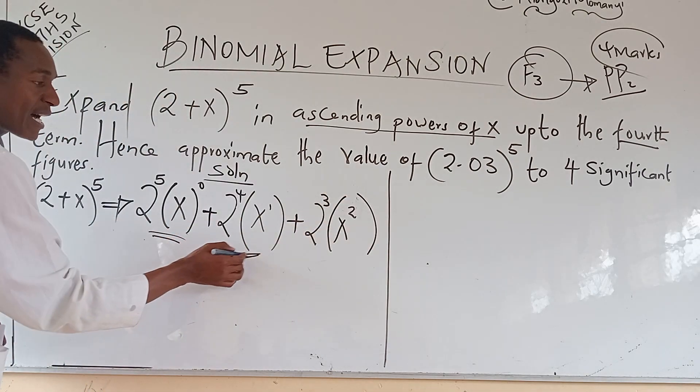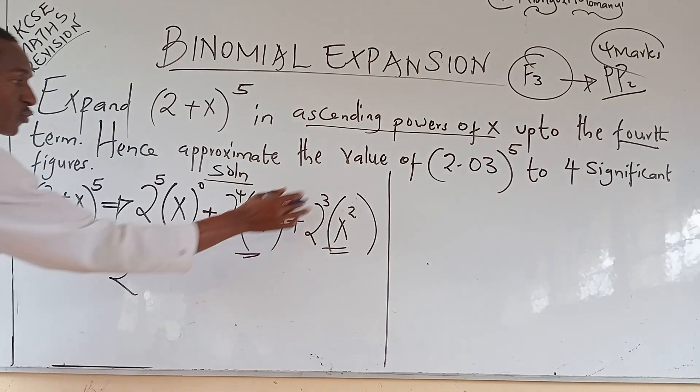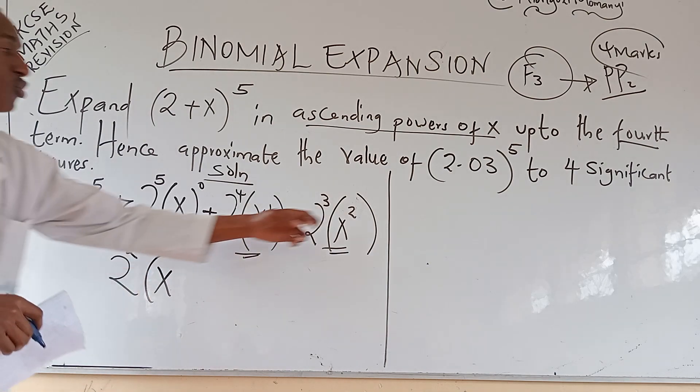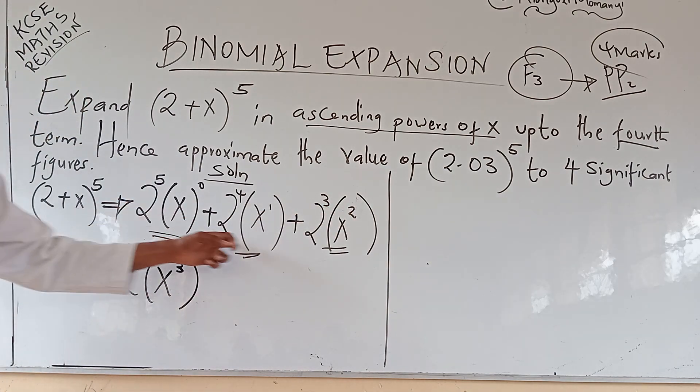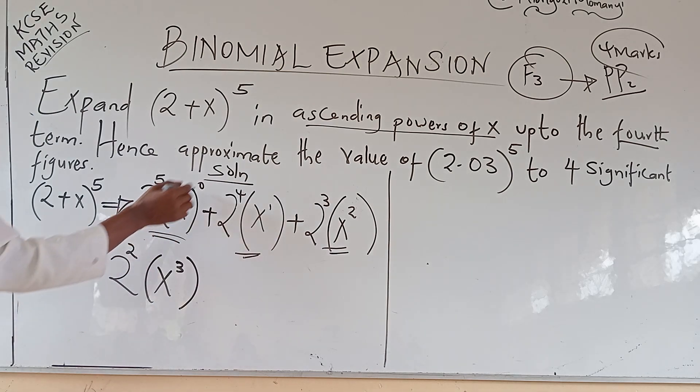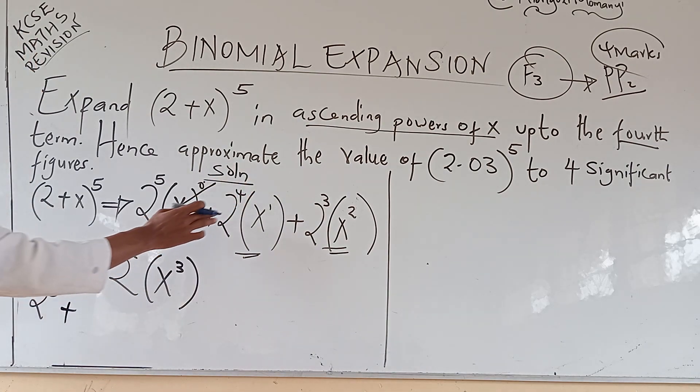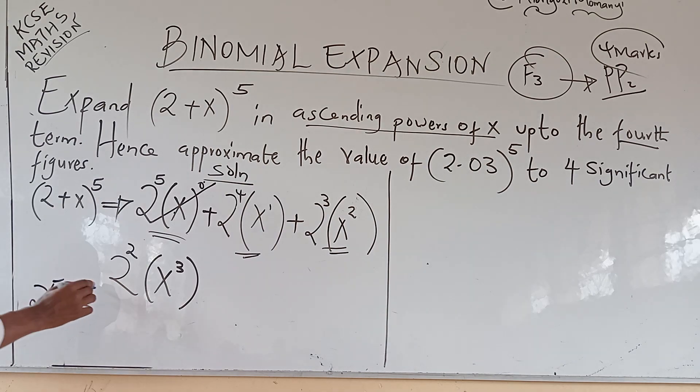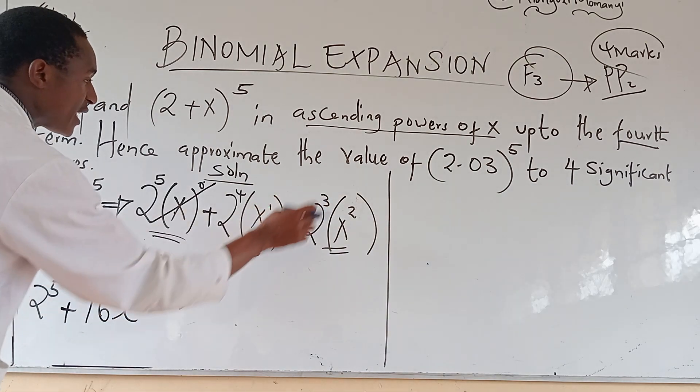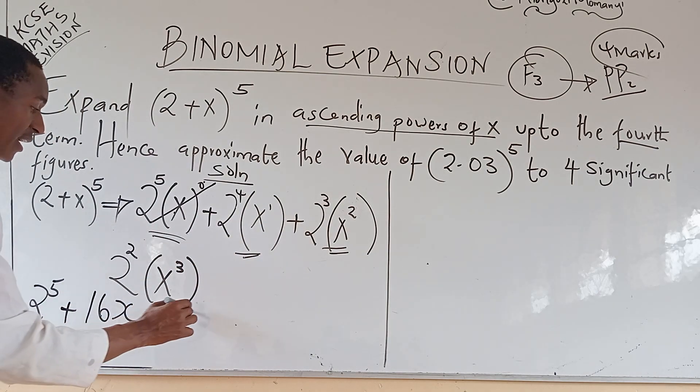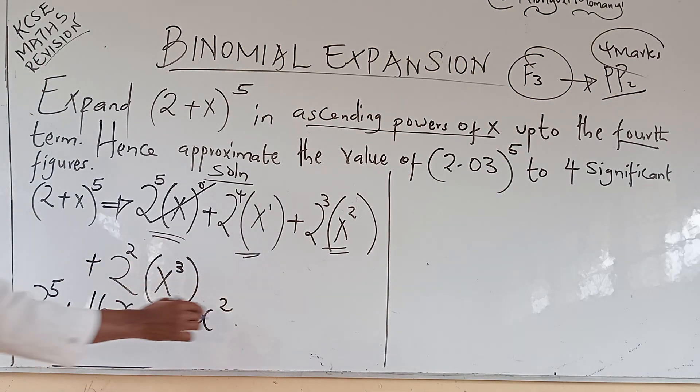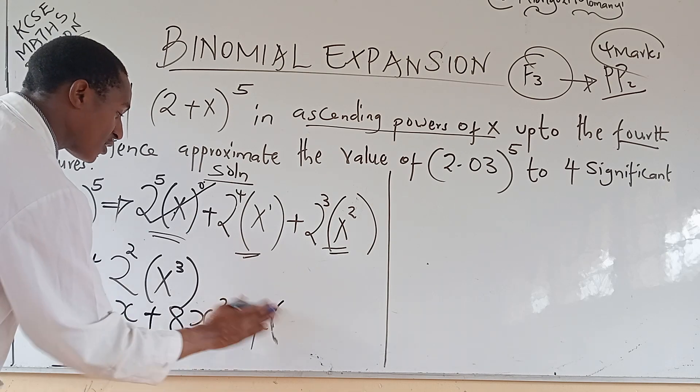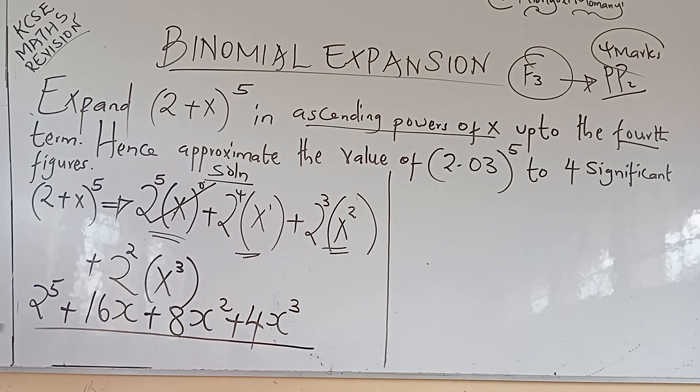And then x goes to power 2. Then this is the first term, second term, third term. The last term now: 2 goes to power 3, and then x from 2 ascends to 3. So these are the first four terms that we were guided. Then now, we can write this one as x^0 is 1. So we have 2^5 plus 2^4 is 16, so 16x, then 2^3 is 8, plus 8x^2, then plus 2^4 is 4. This is the expansion.